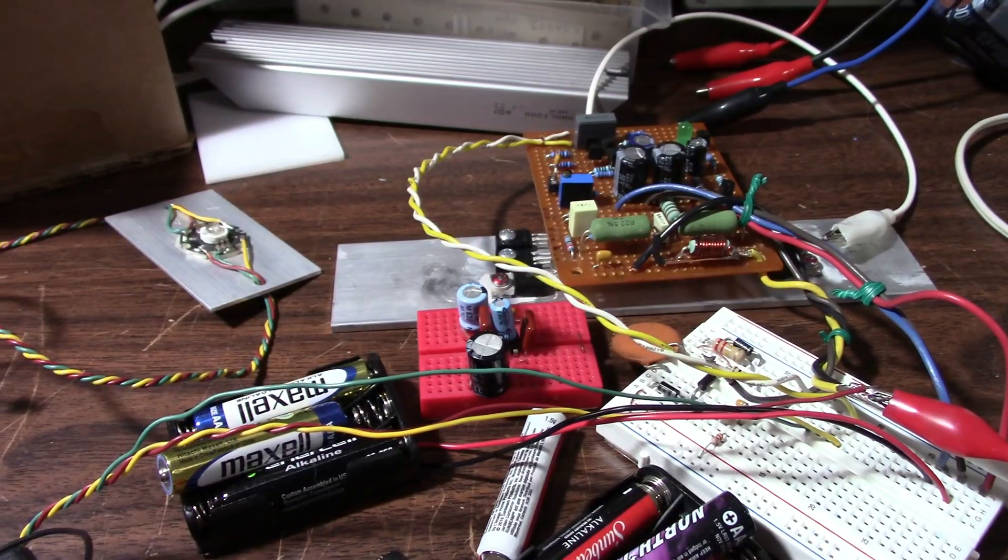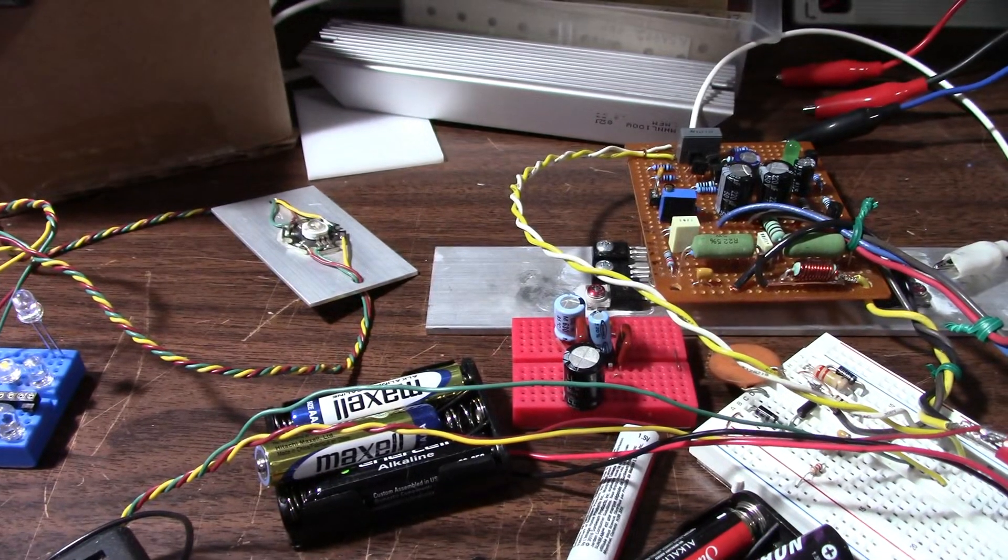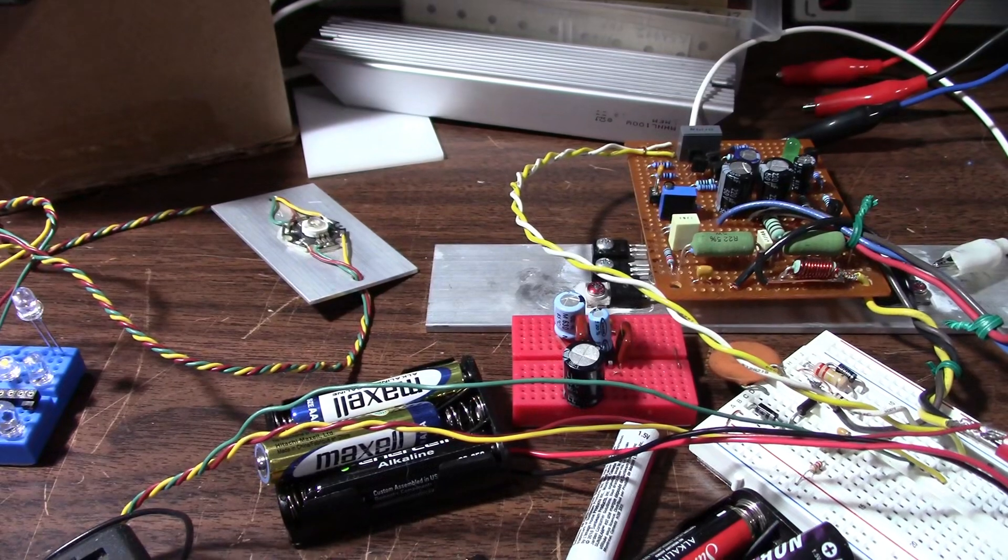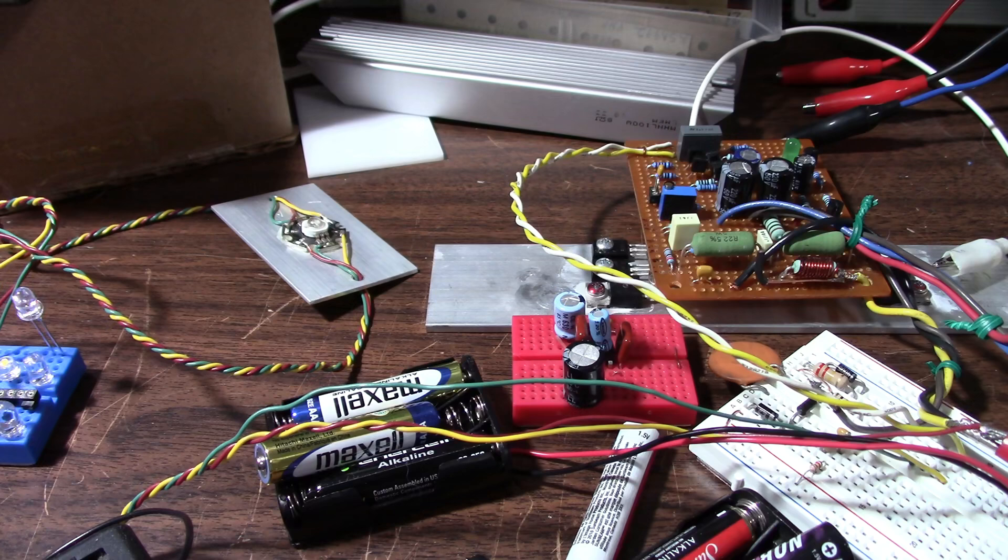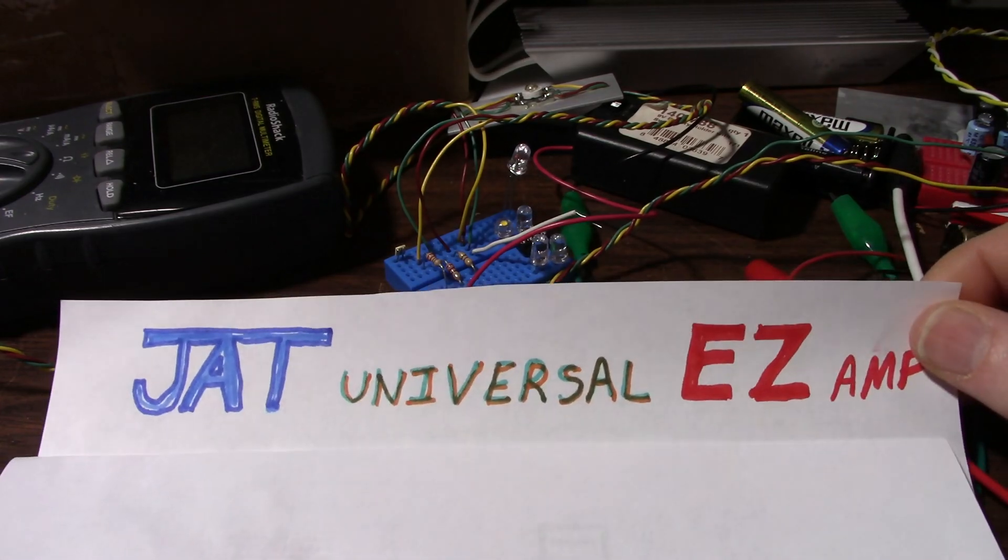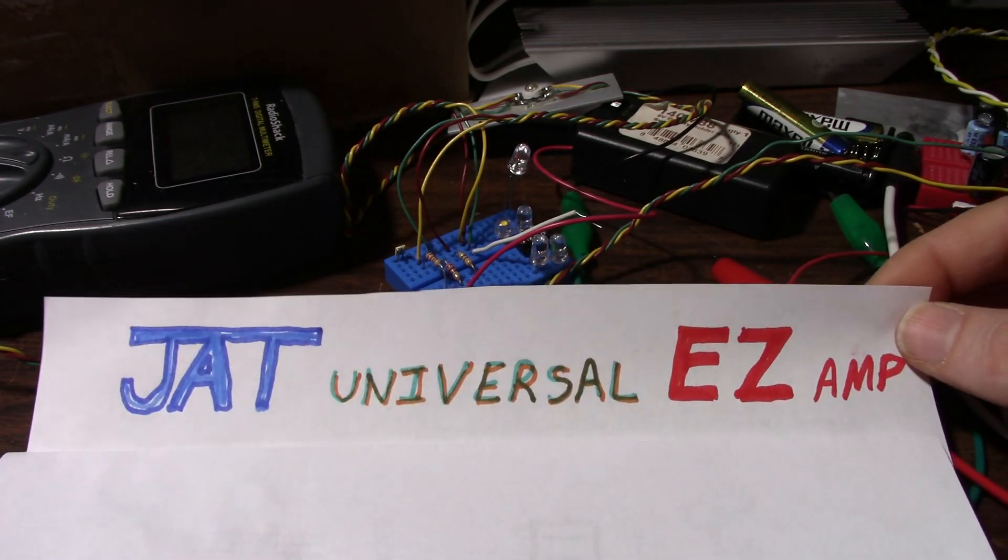Yeah, so I'd have to have a guitar to actually make one to try it out. I would never say never, but I don't know. It's not really in the cards right now. Okay, so let's kick off the next amplifier project. I'm calling this the John Audio Tech Universal Easy Amp. I'm not sure if I'm going to keep the name Universal in there, but at least it'll be called the John Audio Tech Easy Amp.